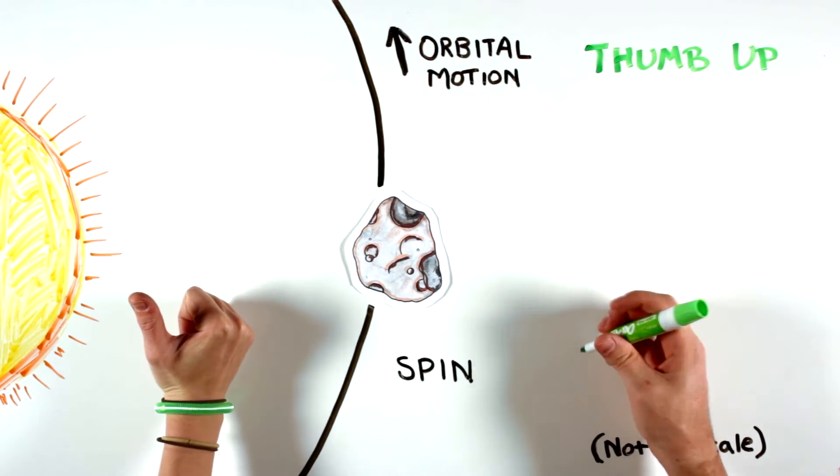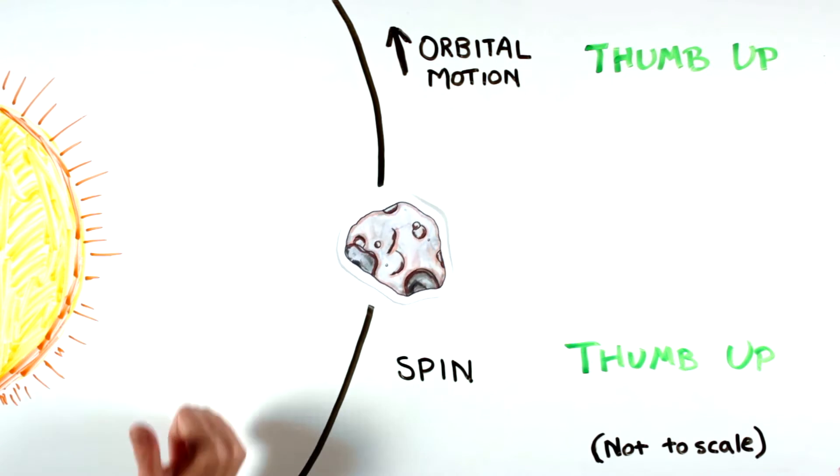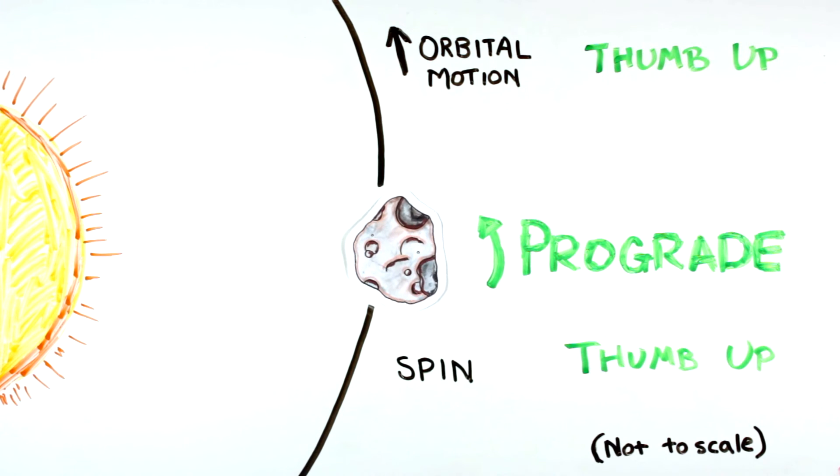Next, curve your fingers in the direction of the asteroid's spin. If your thumb points in the same direction as it did for the orbital motion, the spin is prograde.